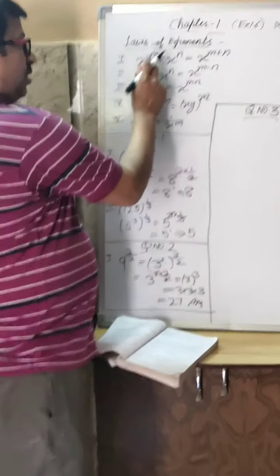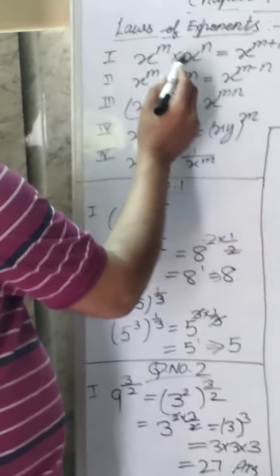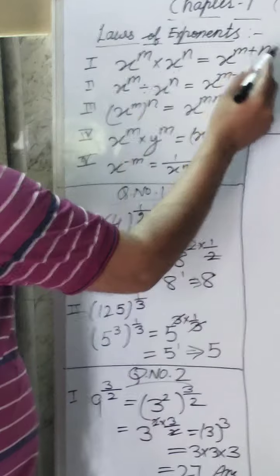First formula is x power m times x power n is equal to x power m plus n. If base is same and multiply, then powers will add.